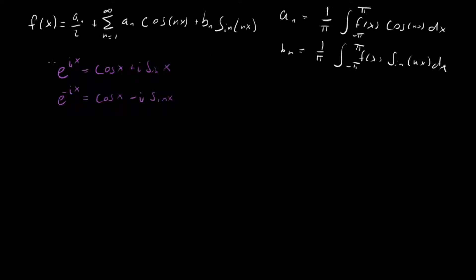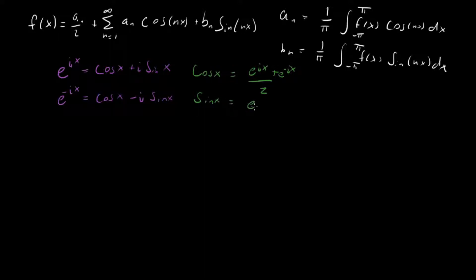We can do that by adding these two equations. Adding them gives 2 cosine x — the sine terms cancel — so we can isolate cosine x. We get that cosine x equals e to the ix plus e to the minus ix over 2. And likewise, sine x equals e to the ix minus e to the minus ix over 2i. You might remember these as the real and imaginary parts of e to the ix.